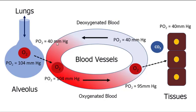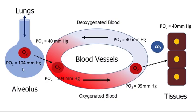The 104 meets the 40 — we have a partial pressure gradient, so oxygen can now diffuse into the blood. Oxygen diffuses into the blood, which raises the PO2 of the blood up to 104 millimeters of mercury. Oxygen is then carried through the blood via hemoglobin, combining with hemoglobin and carried over to the tissues. Before it reaches the tissues, the blood mixes with some deoxygenated blood, which lowers the PO2 to 95 millimeters of mercury.